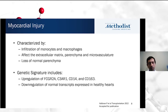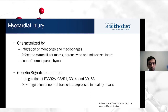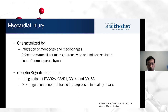The hallmark of rejection — whether TCMR or ABMR — is myocardial injury, which can also occur independent of rejection. Myocardial injury is characterized by infiltration of monocytes and macrophages affecting the extracellular matrix, parenchyma, and microvascular gene expression, with loss of normal parenchyma. The molecular signature shows upregulation of mRNA from macrophages and monocytes, and downregulation of normal transcripts expressed in healthy hearts, suggesting injury to normal myocardium.